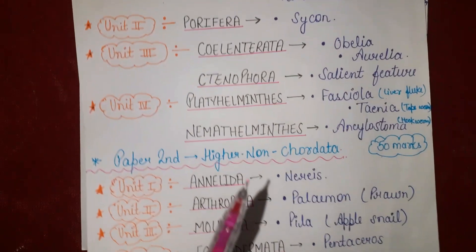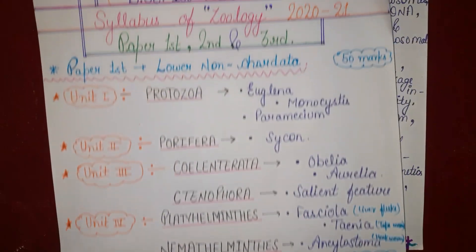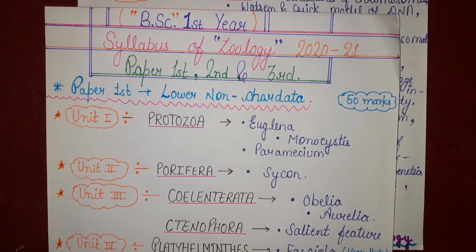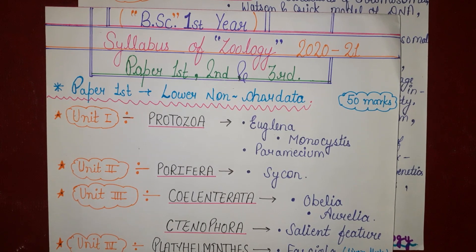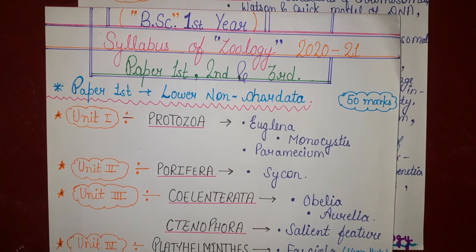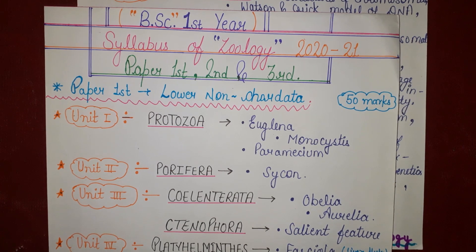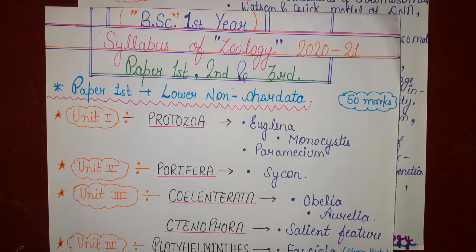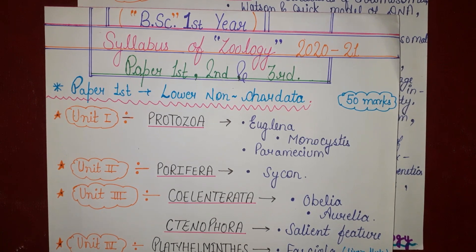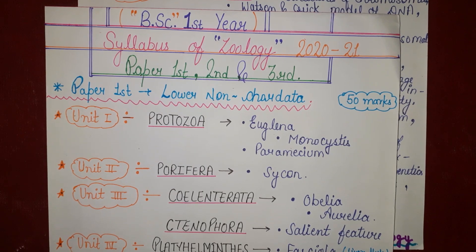That's all — that was our BSc First Year Zoology syllabus, divided into Paper 1st, Paper 2nd, and Paper 3rd. Thanks for watching my video. If you like my video, please like, share, and don't forget to subscribe to my channel, KNOV Biology. Thank you.